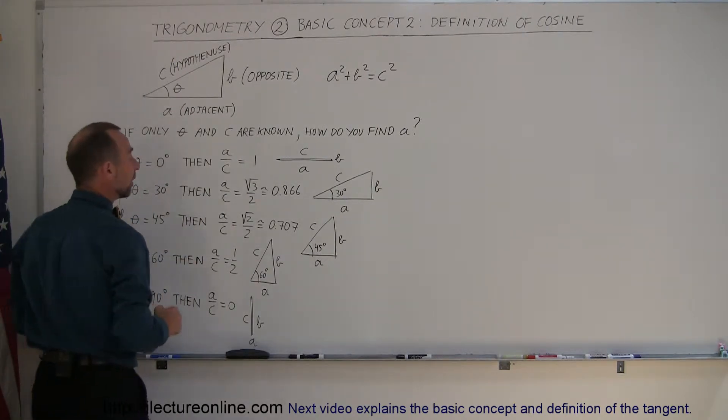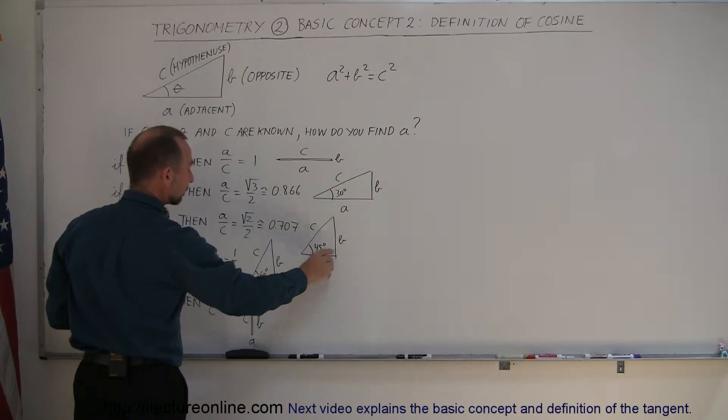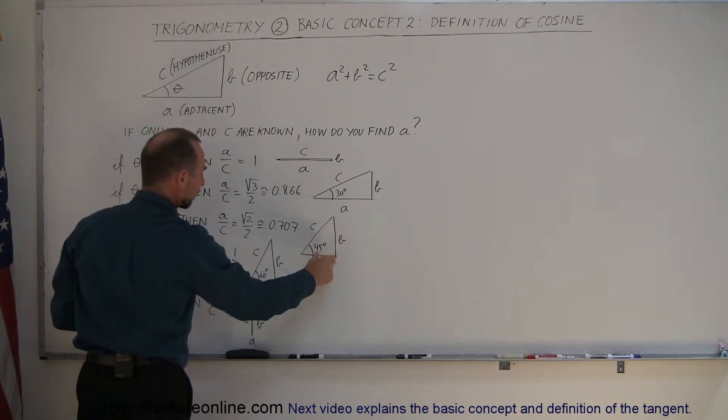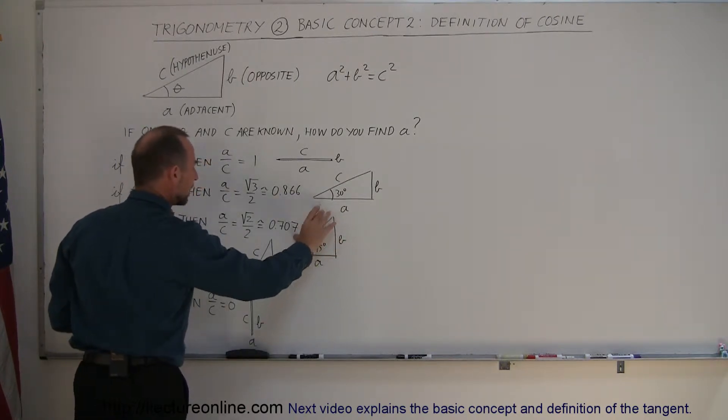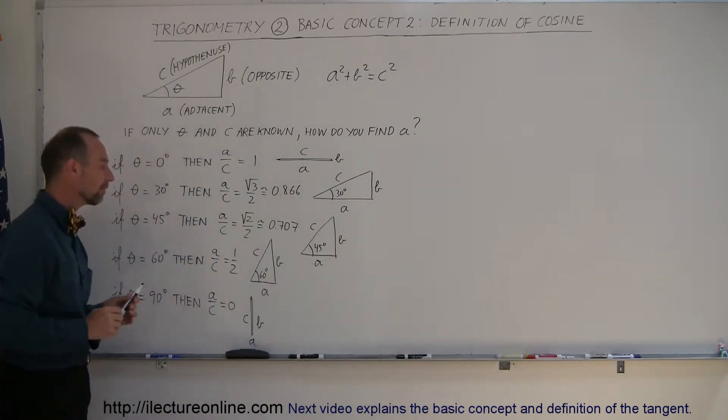If the angle is 45 degrees, then of course the sides b and a are the same, and the ratio of a to c is the square root of 2 over 2, or 0.707.